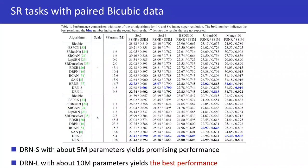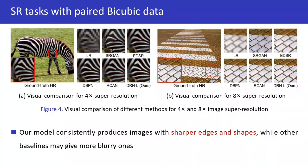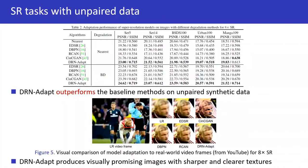Experiments on SR tasks with paired data show that our method outperforms the considered baseline methods and produces images with sharper edges and shapes. When adapted to unpaired data, our method also outperforms the baseline methods.